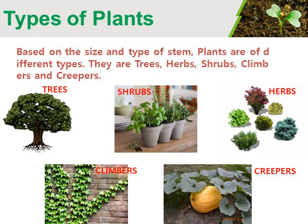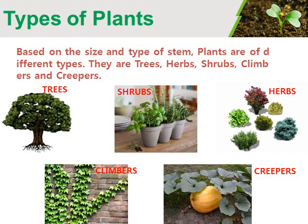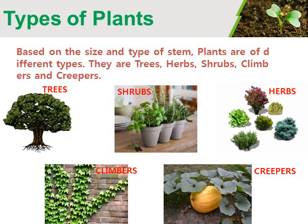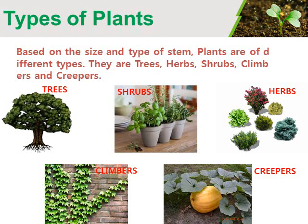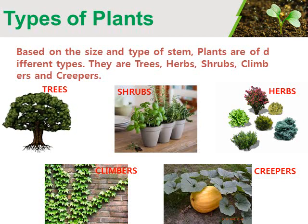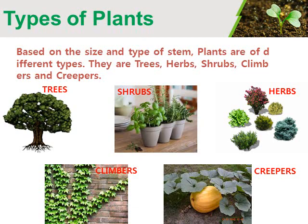There are many types of plants around us. Plants are of different shapes and sizes. There are mainly five types of plants. Based on the size and type of stem, plants are of different types. They are trees, shrubs, herbs, climbers and creepers.